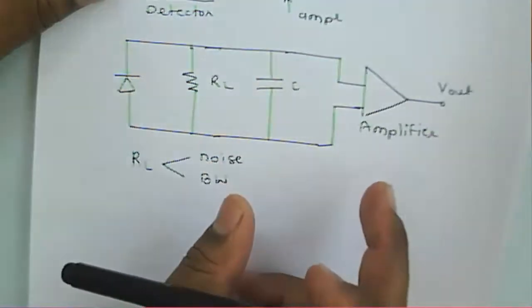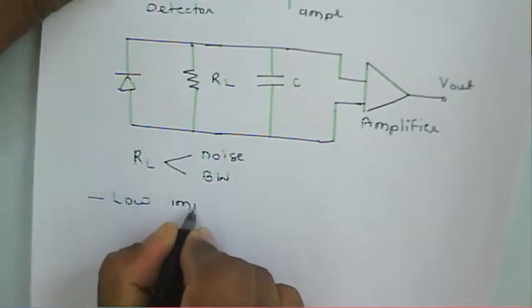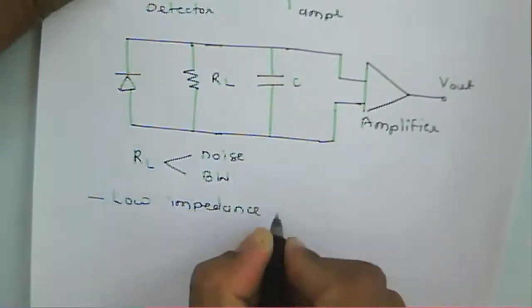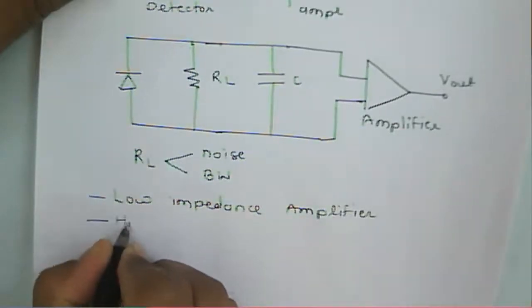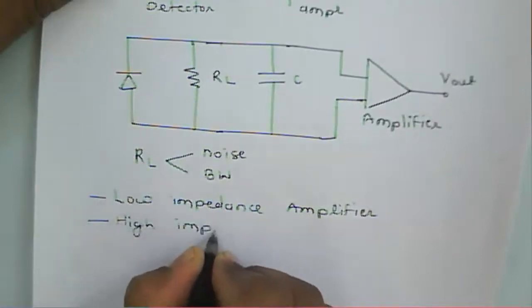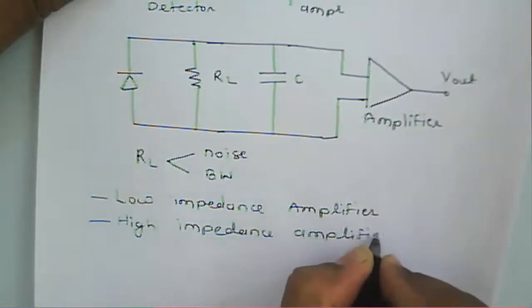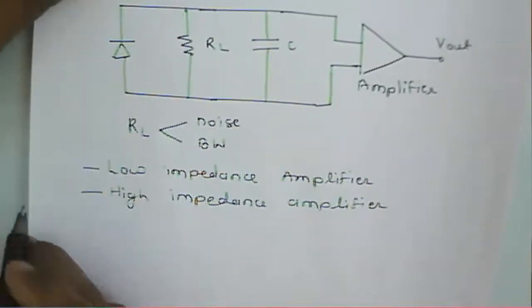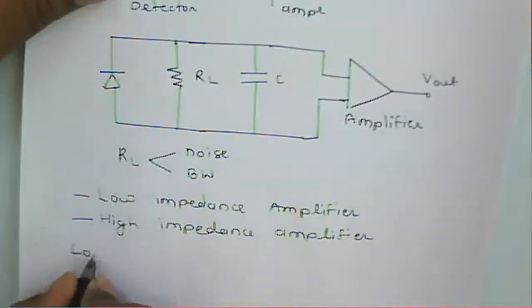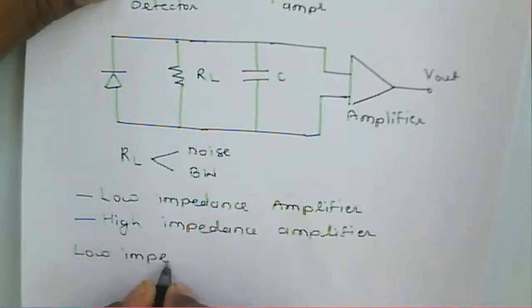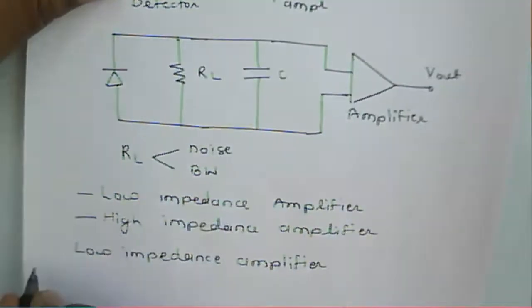For a given particular amplifier in a receiver, we need to use two types of amplifiers: one is a low impedance amplifier and the other is a high impedance amplifier.